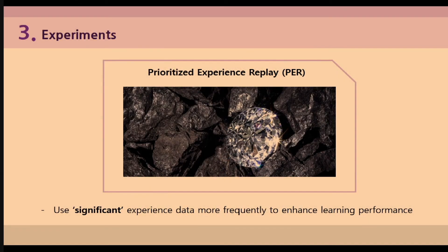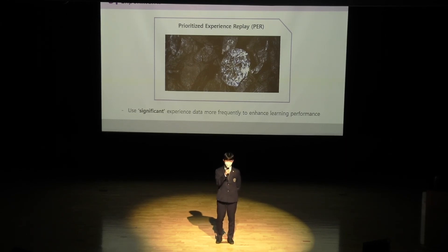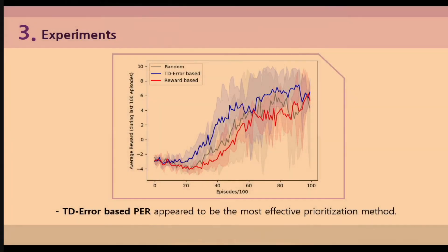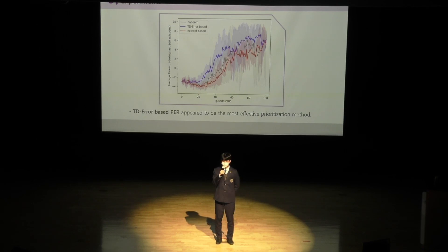After making the obstacle-avoiding system, I wondered how I could teach the agent more efficiently. I searched for advanced versions of DQN and found a technique called Prioritized Experience Replay, or PER for short. In a nutshell, it uses more significant experience data more frequently during training. I conducted an experiment comparing the learning progress of plain DQN versus DQN with PER applied. Even though the difference was not very dramatic, I concluded that TD error-based PER improved learning performance, making the average reward increase faster than plain DQN.